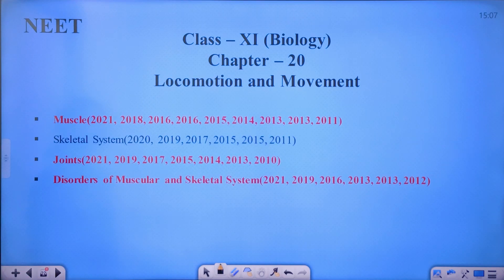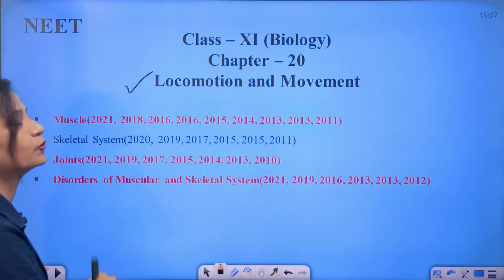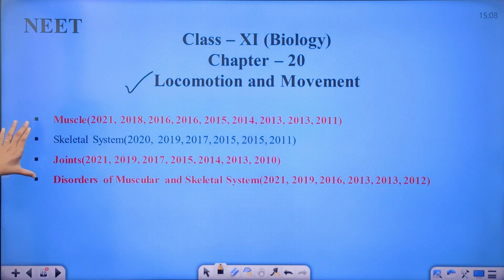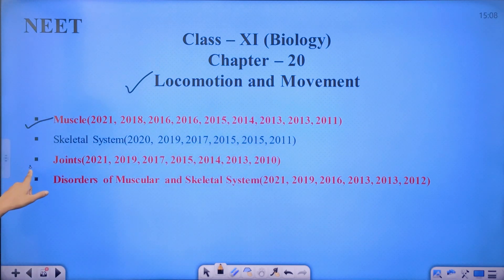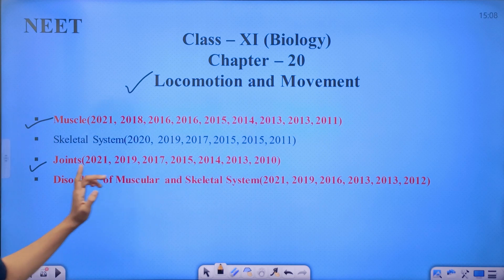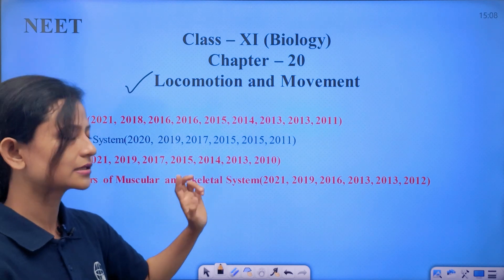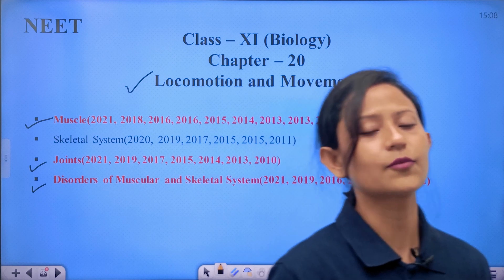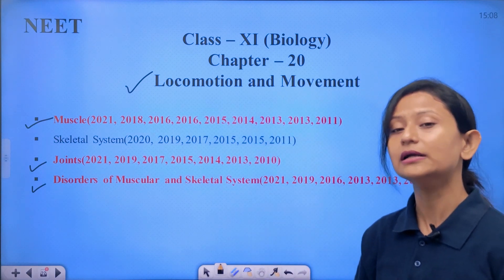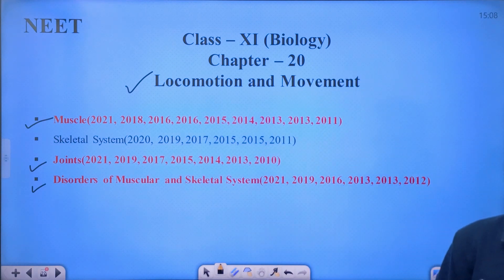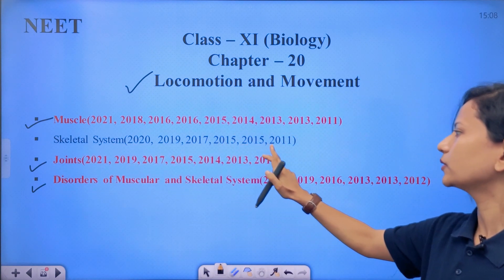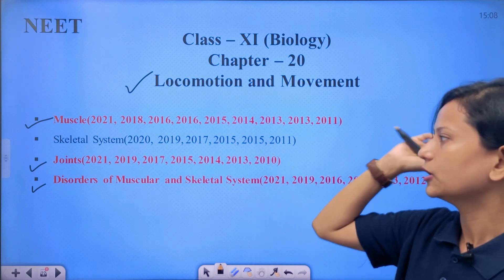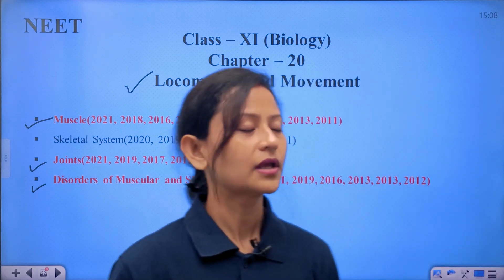Next: Locomotion and Movement. The important topics are muscles — many questions come from this — and joints, which also have many questions. Disorders of the muscular and skeletal system are important from a NEET point of view. These three are the most important topics in this chapter.